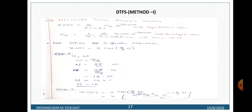First question: Determine the DTFS of the given sequence x of n is equal to 3 cos(π/8 · n).